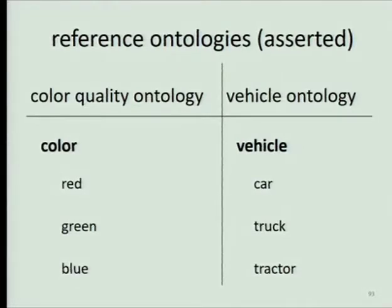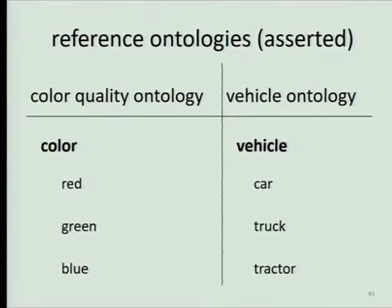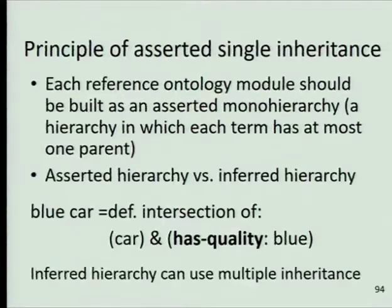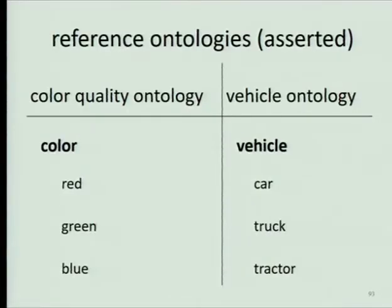The correct answer is we shouldn't have a blue car in our ontology. We should have two ontologies: one ontology for the colors we use, which will vary with the development of paint science, and another ontology for the vehicles we build. Then we can swap colors around and everything will be single inheritance. These are reference ontologies — asserted ontologies. 'Blue car' is a defined class. There is no universal blue car, but we can talk as if there were because we can formulate the definition of a blue car.